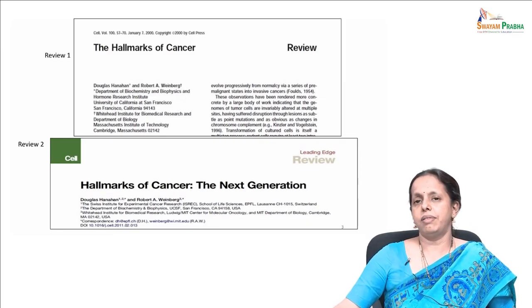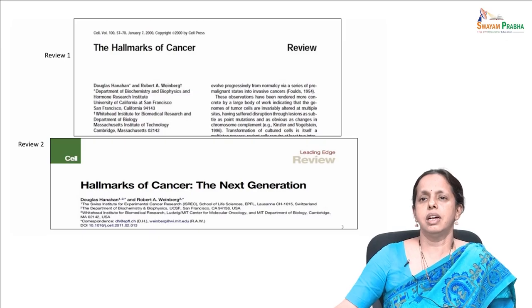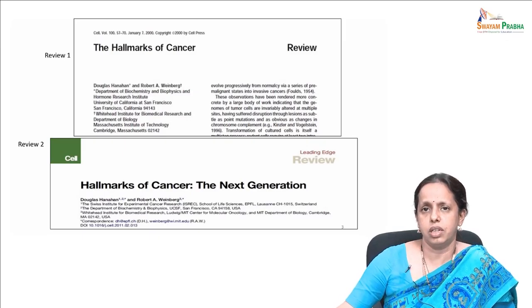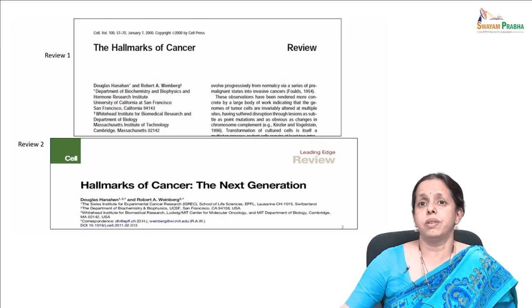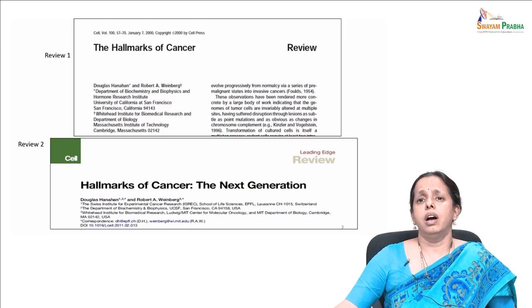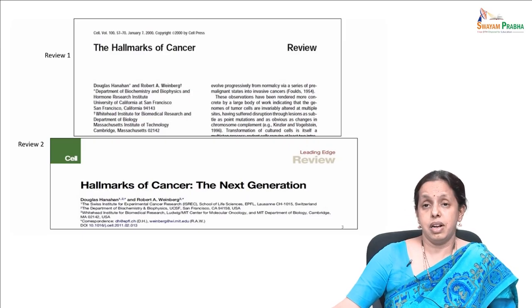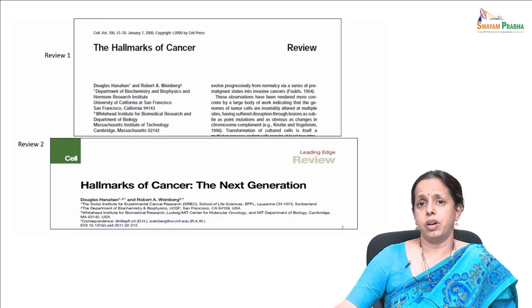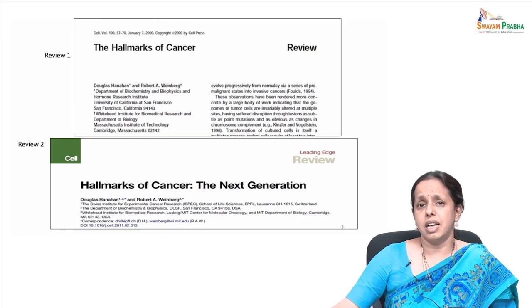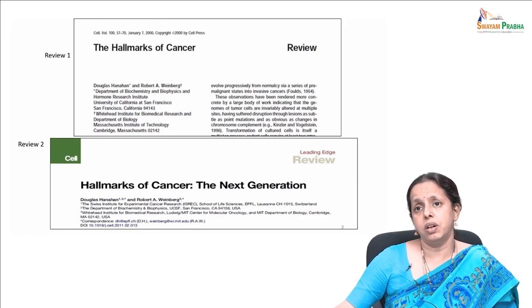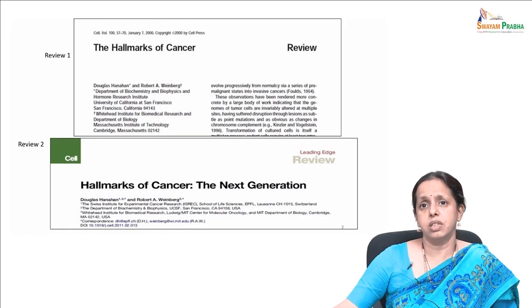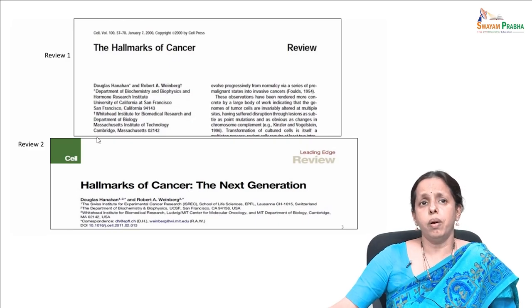These six hallmarks are: self-sufficiency in growth signals, insensitivity to anti-growth signals, evasion of apoptosis, limitless replicative potential, sustained angiogenesis, and tissue invasion and metastasis.